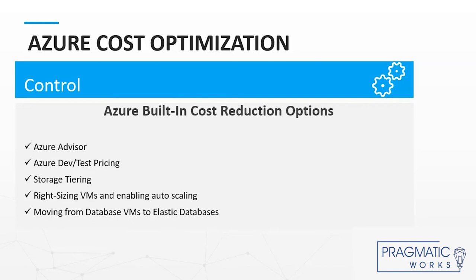Azure dev, test, and pricing — you should be aware that Azure offers a discount for dev and test resources. You can save up to 55% on non-production resources. You also need to be aware of storage tiers. Azure Blob Storage pricing provides premium, hot, cool, and archived storage tiers with several redundancy options. You need to make sure that you are well informed on these options and choose what is appropriate for your project.